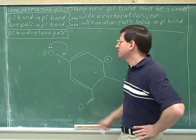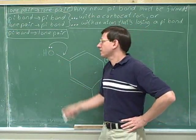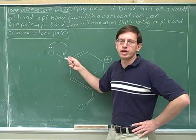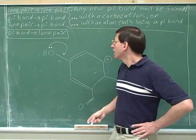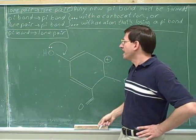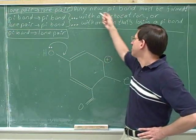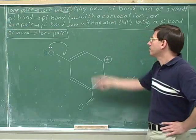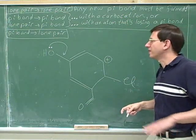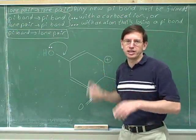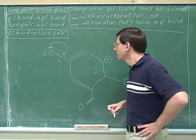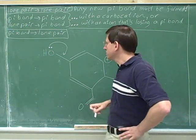Notice that we can see that we're exceeding the octet rule without actually drawing the new resonance structure. Because any time you form a new pi bond, if it's not with a carbocation and not with an atom that's losing a pi bond, that's automatically going to exceed the octet rule.